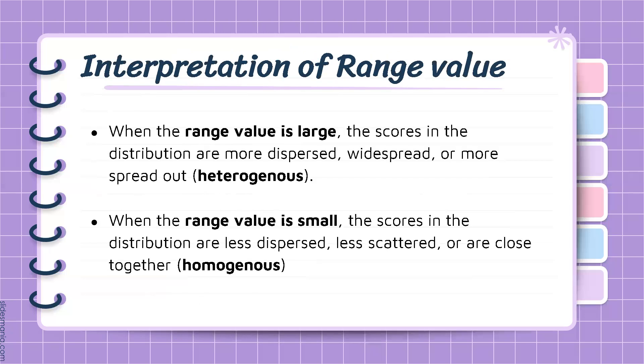How do we interpret the range value? When the range value is large, the scores in the distribution are more dispersed, more widespread, or more spread out — we can say that the distribution is heterogeneous. On the other hand, when the range value is small, the scores are less dispersed, less scattered, or are close together — we can say that the distribution is homogeneous.